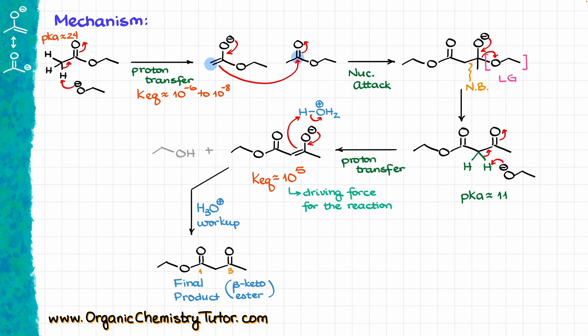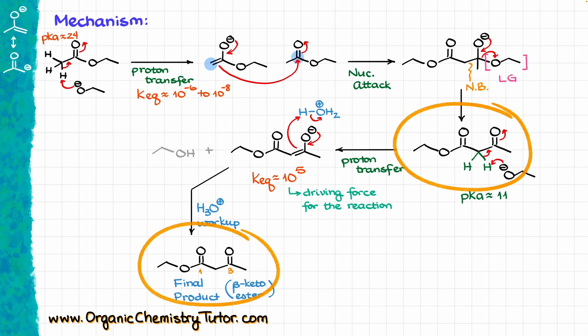This mechanism looks kind of funny, because we end up with the same product twice — once in the middle of our mechanism, and then again at the end after our acidic workup. But as I've mentioned, the very first time we come across our product, it gets immediately enolized. That's why we are not isolating it at that point — it's just physically impossible. We have to re-protonate the intermediate in order to actually get that product.